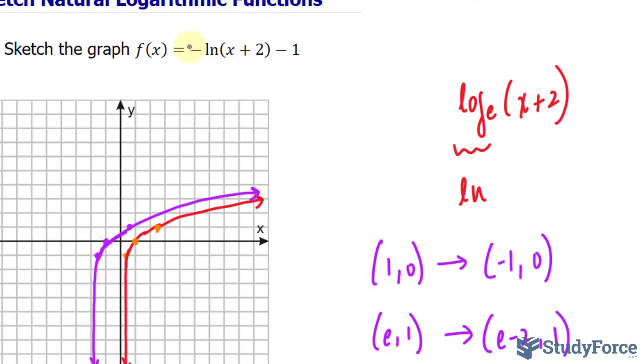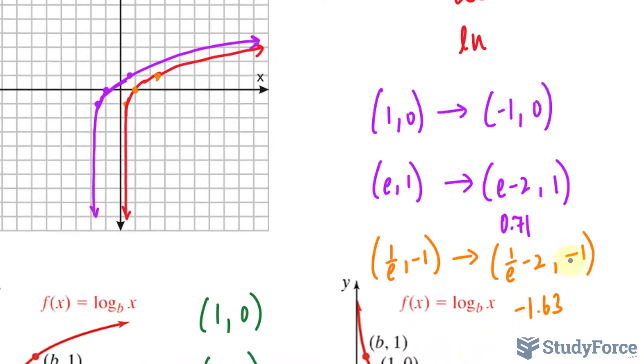Our next transformation will be this negative that's at the front. That negative will reflect the graph about the x-axis. And the way you do that is you look at these brand new points that you created and you change the symbol of the y-coordinate. You can't change the symbol of 0, so this remains where it was. This point right here, the one that I'm highlighting, will remain where it is.